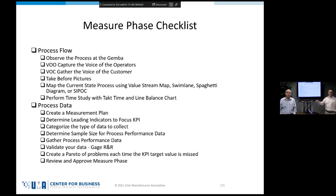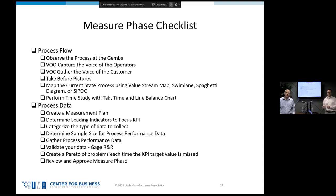If you go to a Black Belt level, there are additional tools you can use in the measure phase, but for Green Belt these are the core tools Ryan and I use 99% of the time on the vast majority of projects. In your handouts you have a checklist, and we also have software called KPI Fire where this checklist and all the tools are available electronically.